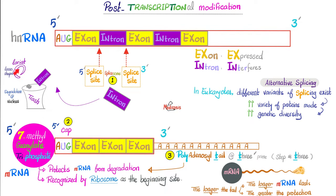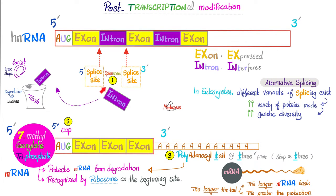While going to the trash, the intron acquires a lasso-like shape called a lariat. Eukaryotes are amazing — they have a vast variety of proteins. How did they manage to produce such variety even though we have a limited number of genes? The answer is alternative splicing. I can splice this way, or that way, or another way — splicing variety known as alternative splicing, which increases the variety of proteins produced and increases genetic diversity. That was step 1: the splicing.